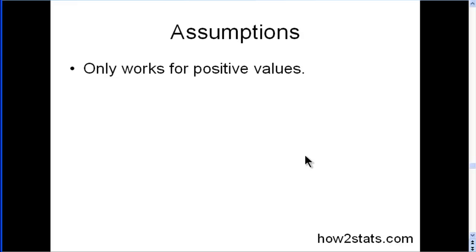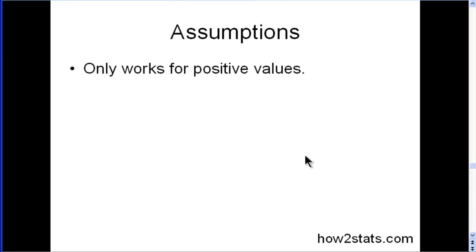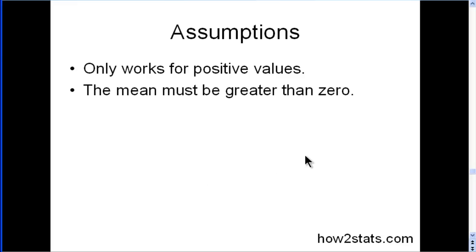There are some assumptions associated with the coefficient of variation and applying Levene's test on coefficient of variation values. It only works for positive values — if you have negative values when subtracting scores from means, it's not going to work. The mean must be greater than zero, so it wouldn't work for z-scores.